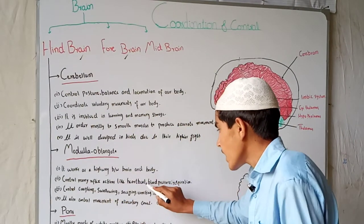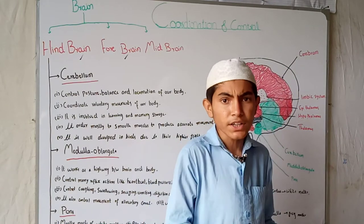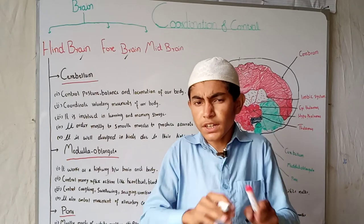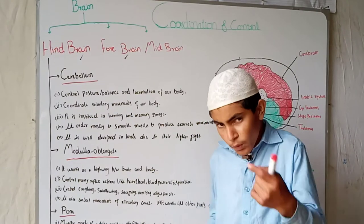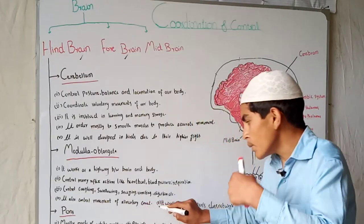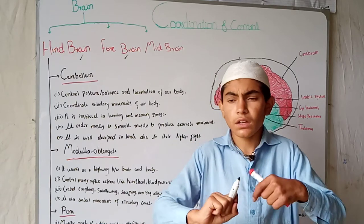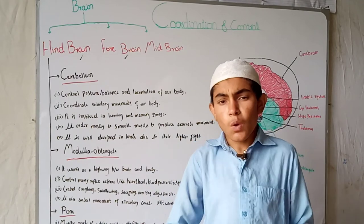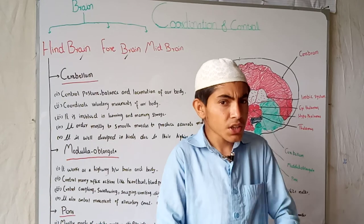The medulla oblongata controls many reflex and involuntary actions such as heartbeat, blood pressure, and respiration. These are not in our conscious control — they occur automatically under the command of the medulla oblongata. It also controls coughing, sneezing, swallowing of a bolus, vomiting, digestion, and the movement of the alimentary canal including the esophagus, stomach, and intestines.